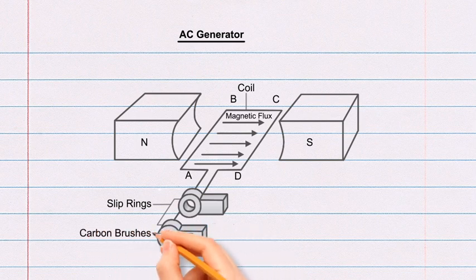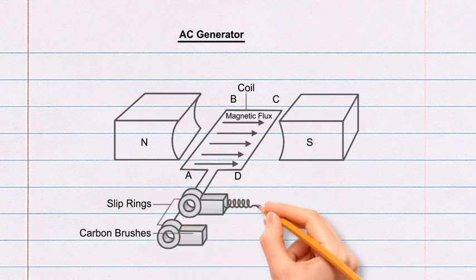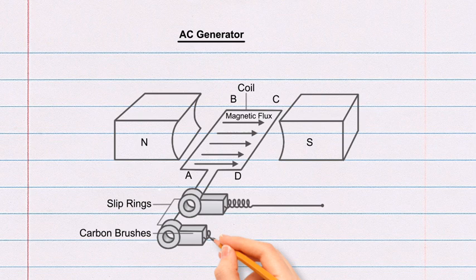Label the rectangular blocks as carbon brushes. From the right side of each rectangular block, draw a spring.